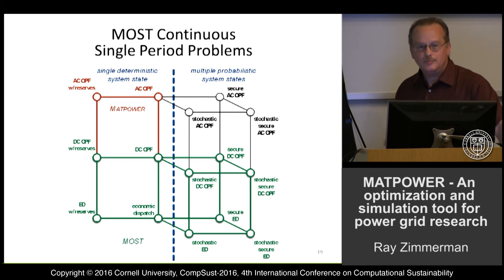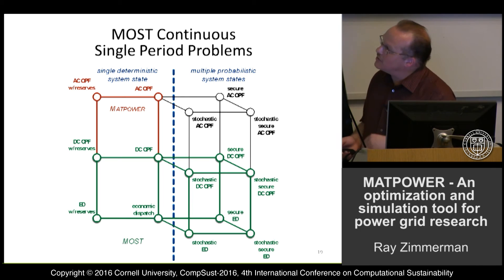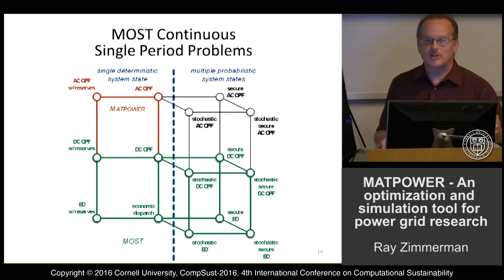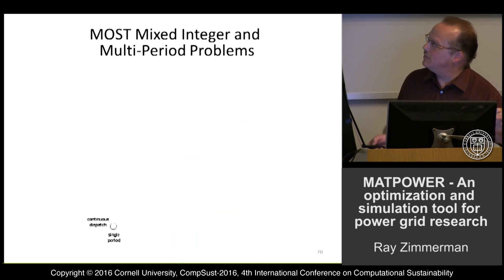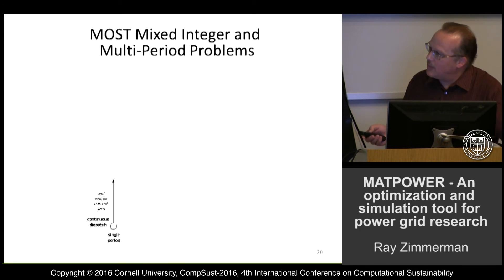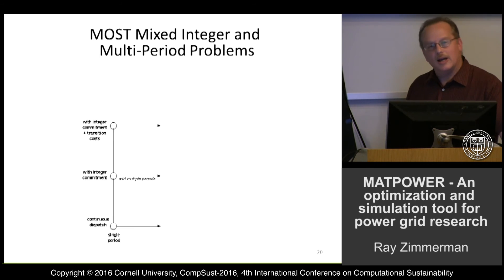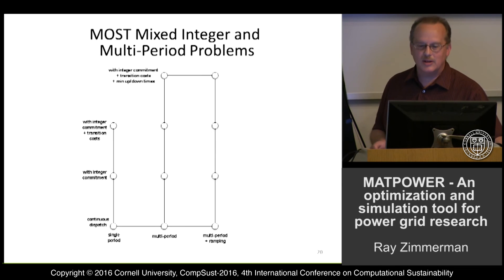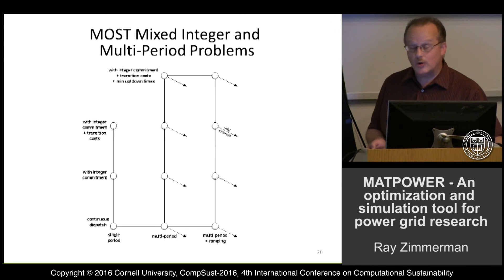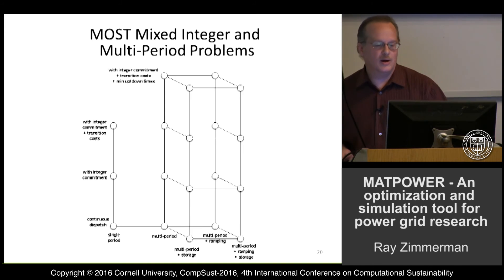From there we can expand in several other dimensions: adding integer variables for integer commitments, startup and shutdown costs, extending to multiple periods with minimum up and down time constraints, ramping constraints, and storage — which gives the opportunity to arbitrage in time.